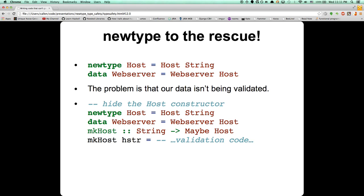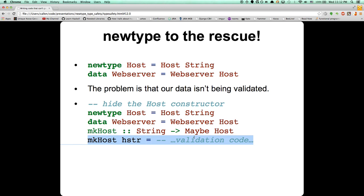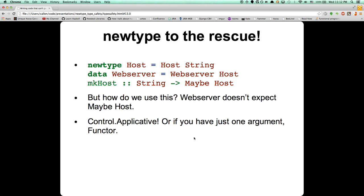The next tactic is we don't export the Host constructor, so callers can't directly construct one. We hide the Host constructor, but our users still need a way to construct a Host object because that's what WebServer expects. The answer is we make a smart constructor function that constructs a Host, but it returns Maybe Host, not just Host. This is useful because it validates the string to make certain it's a valid host — like running URL validation.